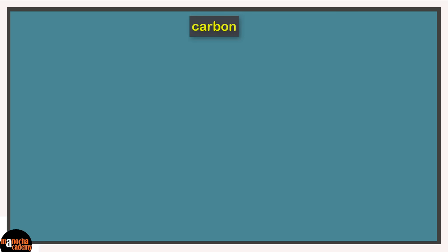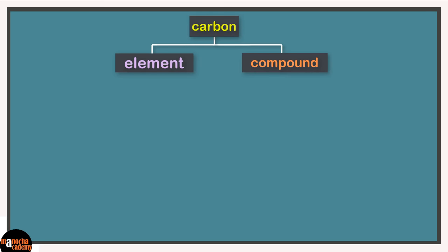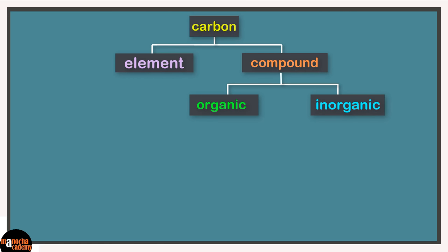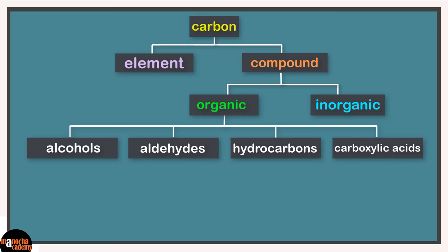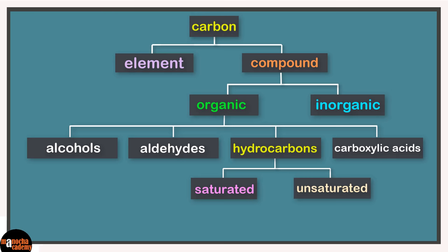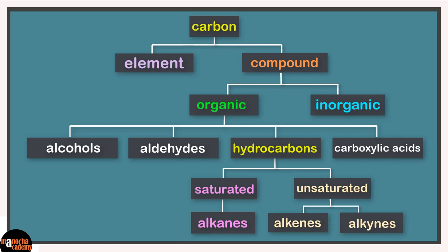Here's a summary of what we've learned: Carbon can exist as an element or as a compound. Carbon compounds can be broadly divided into inorganic and organic. There are many types of organic compounds; we focused on the simplest ones — hydrocarbons. Hydrocarbons can be divided into saturated and unsaturated. Saturated hydrocarbons are alkanes — they only contain carbon-carbon single bonds. Unsaturated hydrocarbons are of two types: alkenes, which contain at least one double bond, and alkynes, which contain at least one triple bond.